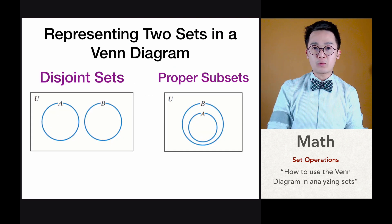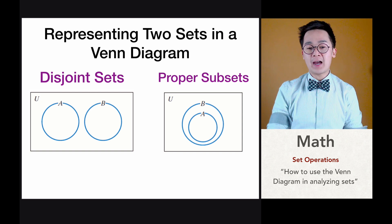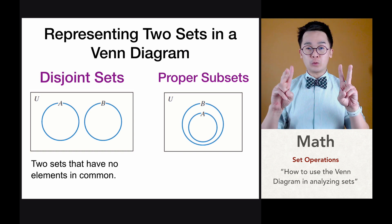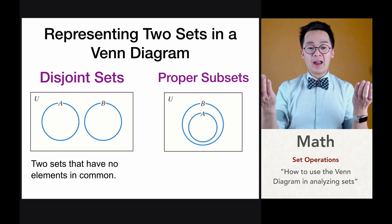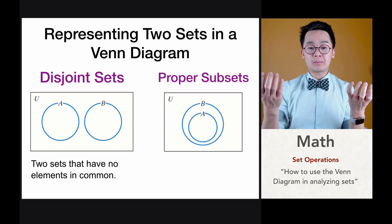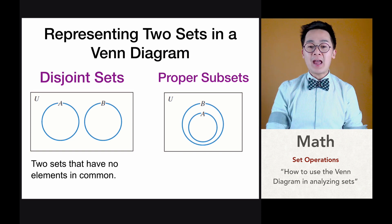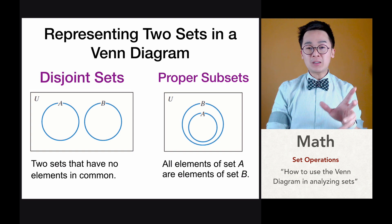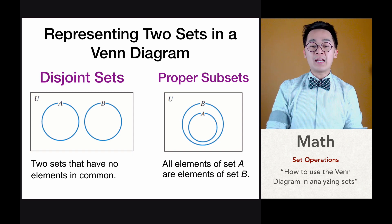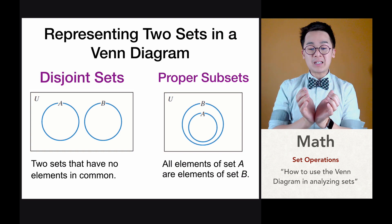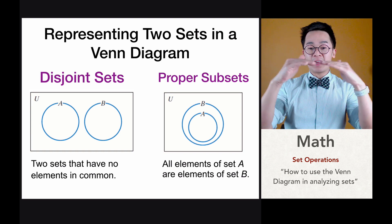There are several ways to show a Venn diagram. We have disjoint sets and proper subsets. In disjoint sets there are two groups, set A and set B, with no elements in common. In proper subsets, all the elements of set A are enclosed inside set B within the union set.